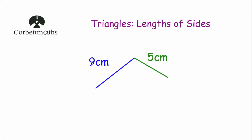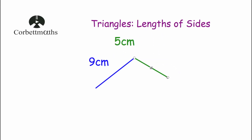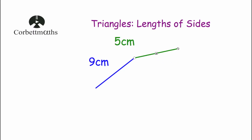Let's start off by using our 9cm line and our 5cm line and see what happens whenever we make the angle between those two lines larger, and what happens whenever we make it smaller. So as we make the angle larger and larger, the third length of the triangle will get larger and larger. As we move it around, the length of the line joining the ends will get larger and larger.